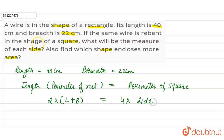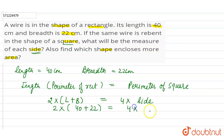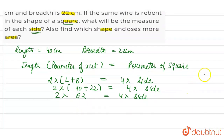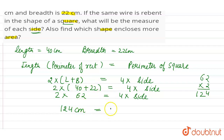We have to calculate the side of the square. So let's put the values: 2 into (40 + 22) equals 4 into side. So 2 into 62 equals 4 into side, which gives us 124 cm. This is the perimeter of the rectangle, which equals the perimeter of the square, 4 into side.